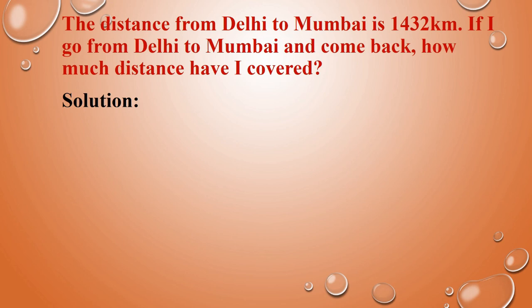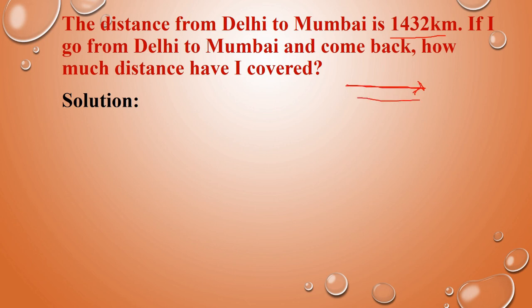Word problem: The distance from Delhi to Mumbai is 1432 km. If I go from Delhi to Mumbai and come back, how much distance have I covered? Here we are going to find the distance. Delhi to Mumbai — that distance they have given, that is 1432 km. And come back — again the same distance. Once he went, again he came. So two times he has travelled.